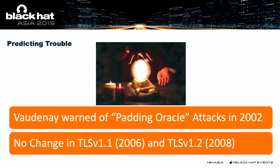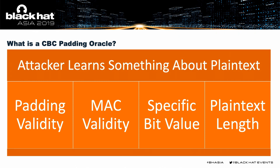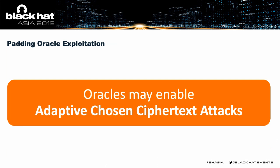A padding oracle is when the server reveals something to the attacker about the plaintext or ciphertext being processed. Some things an attacker might look for: can you tell if the message received by the server has valid padding? Does it have a valid MAC? Is it possible to know that a value is within a certain range, or that a specific bit has been set? Even if the server just leaks the amount of plaintext, that can allow an attacker to work backwards and develop attacks. In general, when you've got a padding oracle, the risk is an adaptive chosen ciphertext attack.